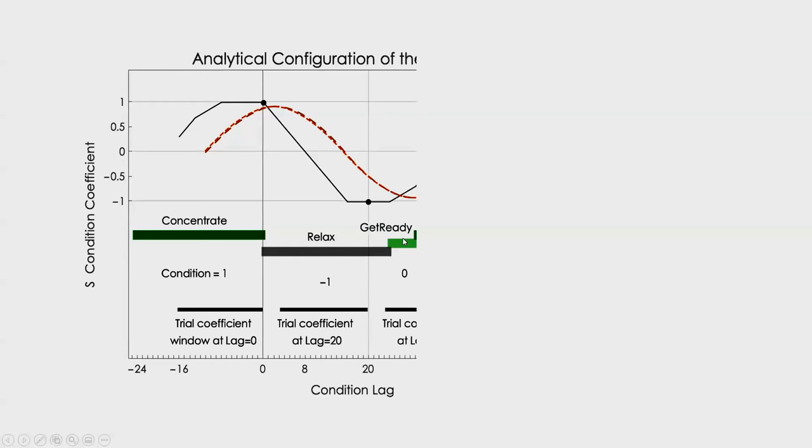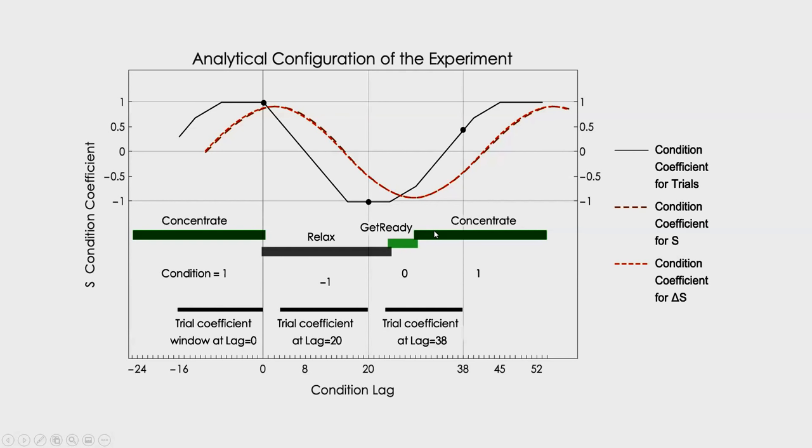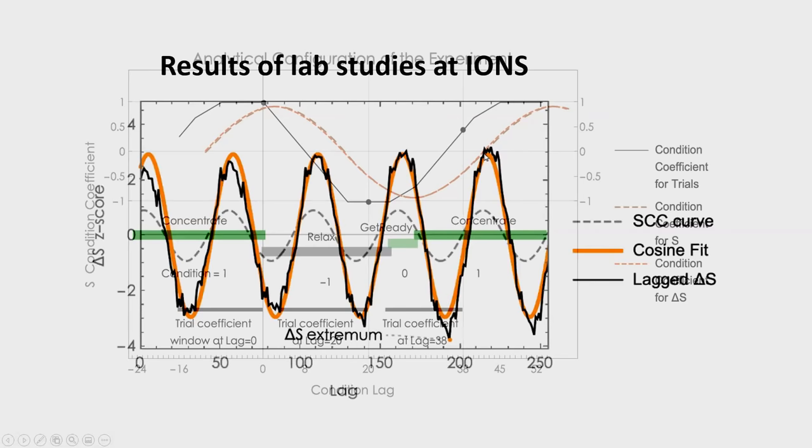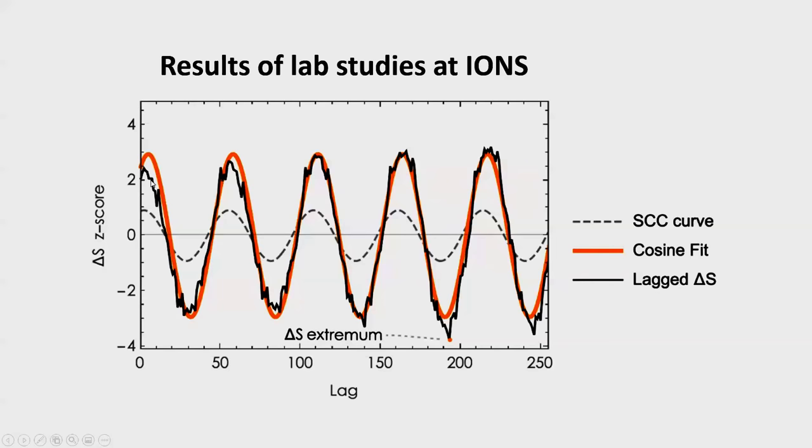So we have periods of concentration and then periods of relaxation. You have this curve that's beginning to develop with a little bit of lag because it takes your mind time to switch. Then there's a period we call get ready, which is three to five seconds, which tells you to stop relaxing, get ready to concentrate, and then another concentrate condition. And you just repeat this again and again. In a single session, you might do this 20 to 40 times, concentrate and relax, each time roughly 30 seconds. And so the model that we would expect, if you're really modulating entanglement strength, it would look something like this curve. You would find a curve in the overall entanglement strength that looks like this.